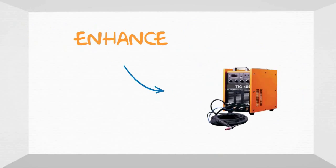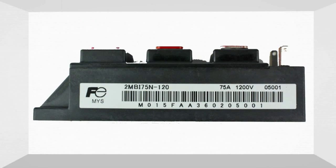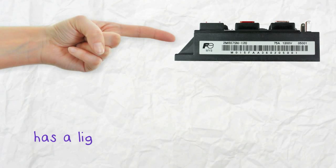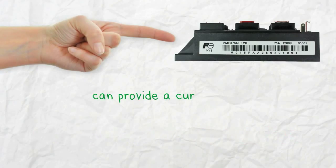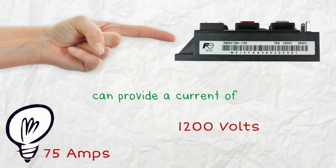Enhance your welding machines with Fuji's 2MB175N120. This IGBT transistor module has a light weight of 5.34 pounds and can provide a current of 75 amps and 1200 volts.